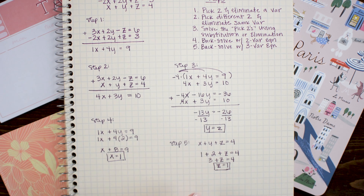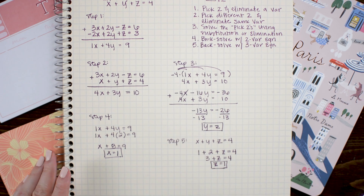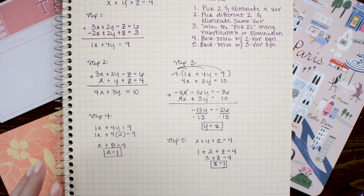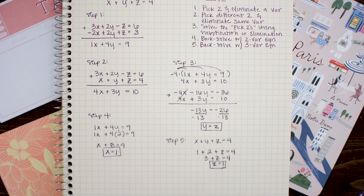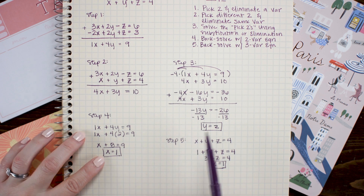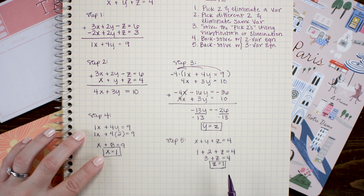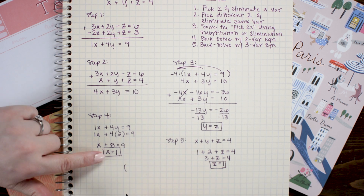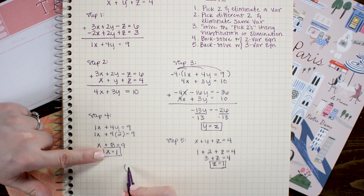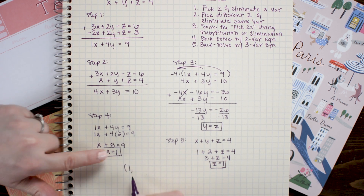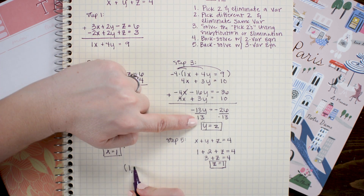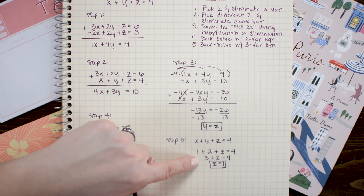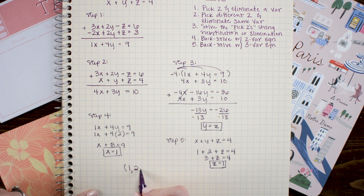In this problem, we found that the coordinate point where our three planes intersect is (1, 2, 1). You can write your solution as a point with the x variable first, the y variable second, and the z variable last.